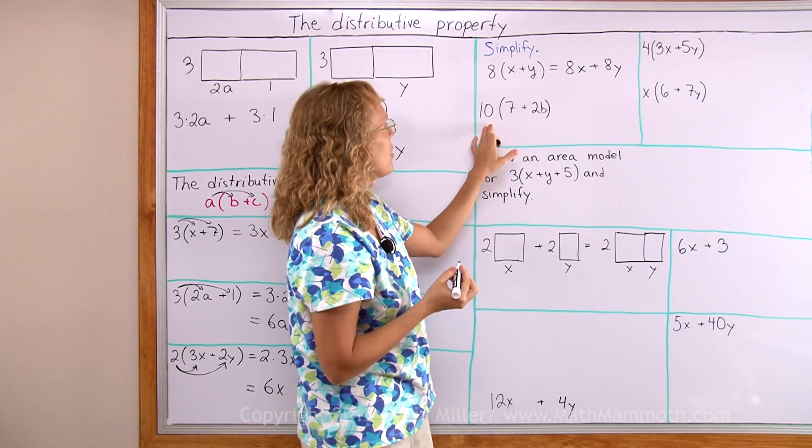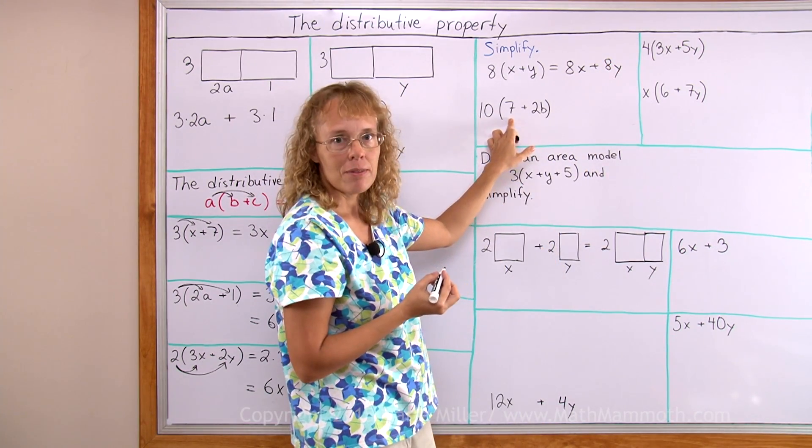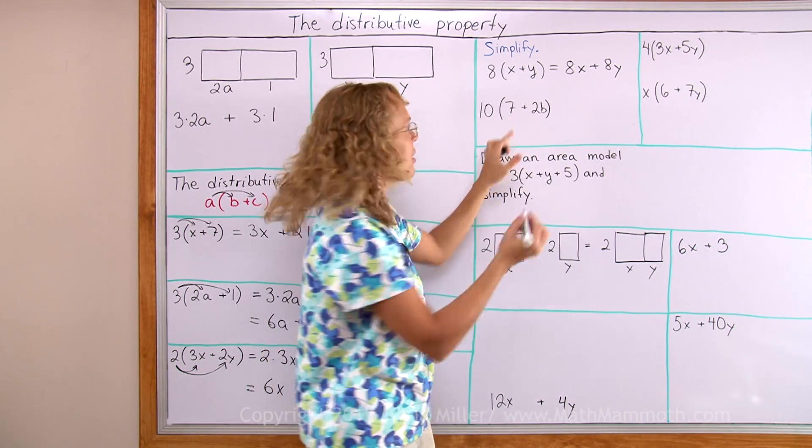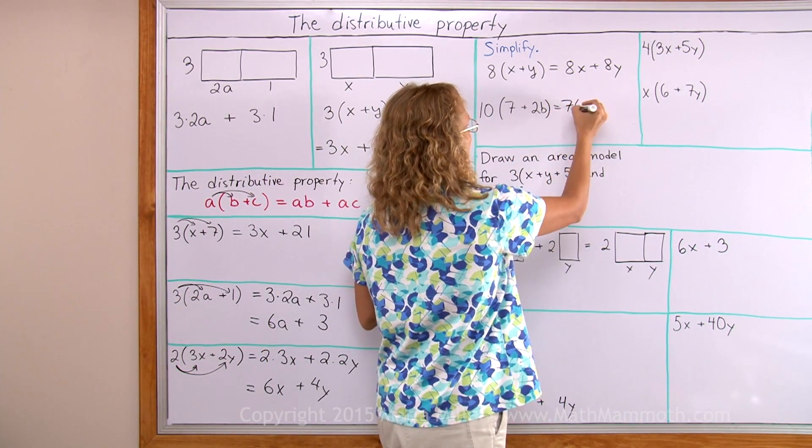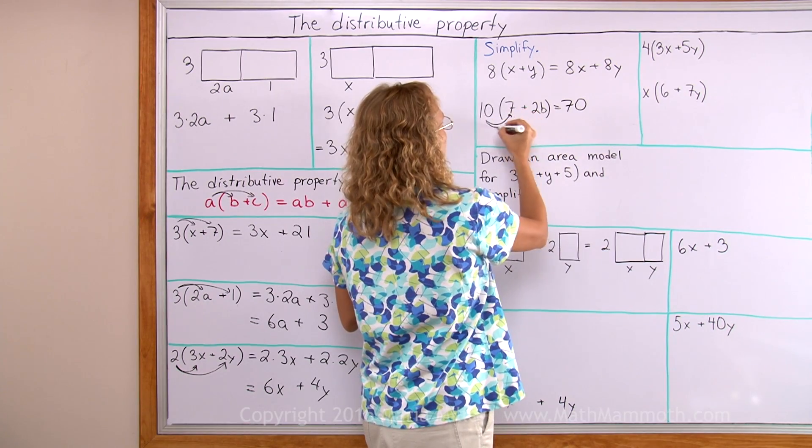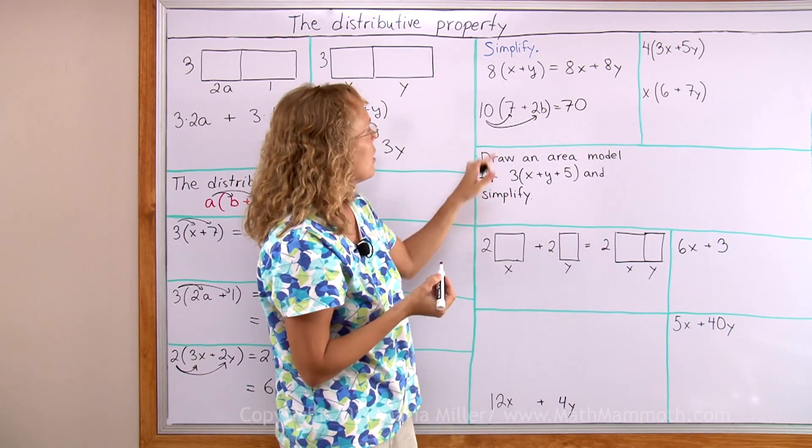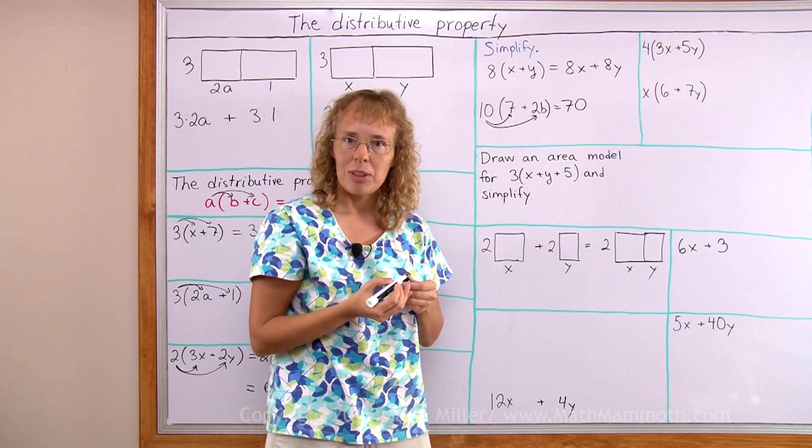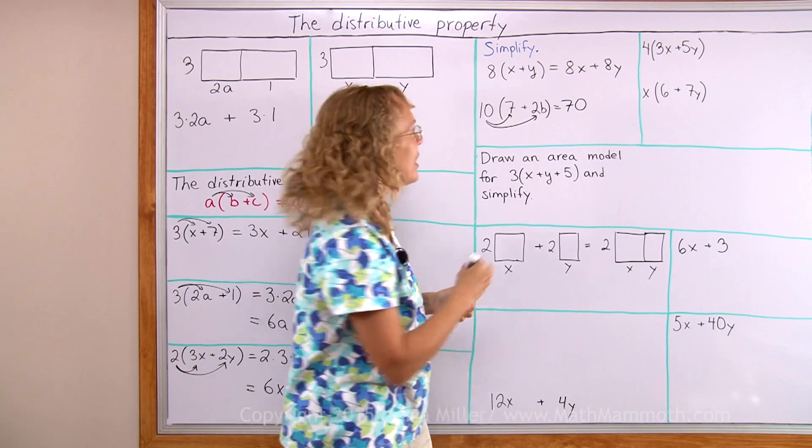This one here, 10 times 7 first. 10 times 7 is 70. And then 10 times that. What's 10 times 2 times b? That would be 20b.